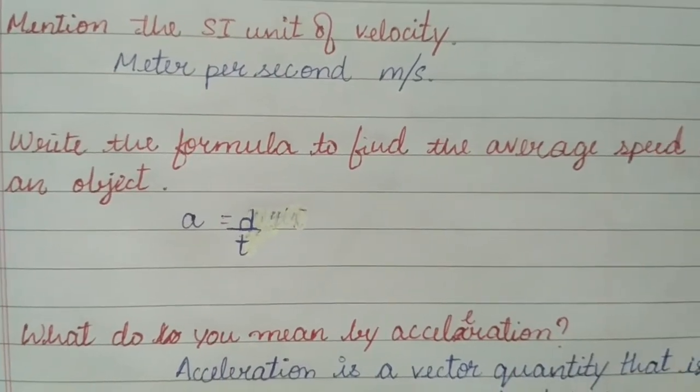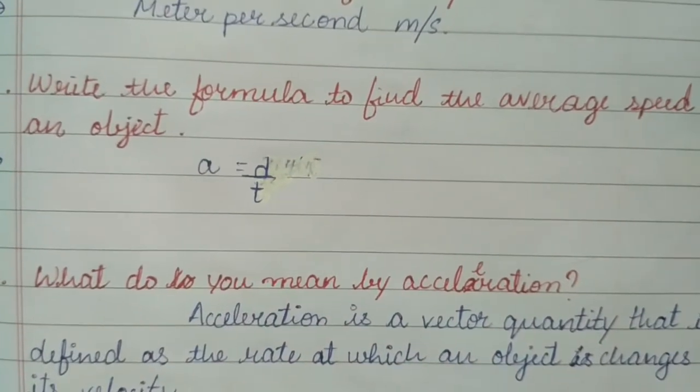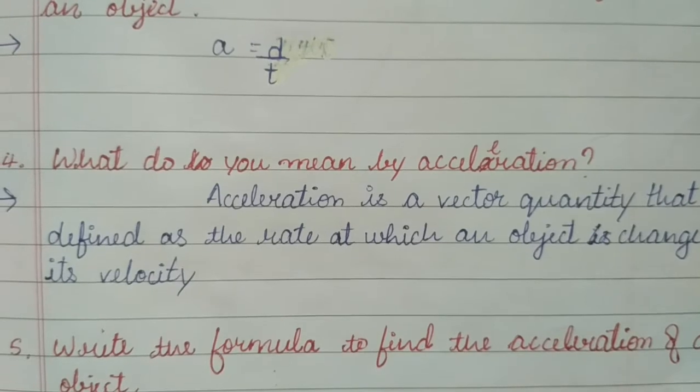Write the formula to find the average speed of an object: a is equal to d by t, where d is the distance and t is the time.